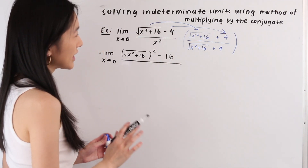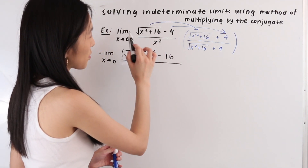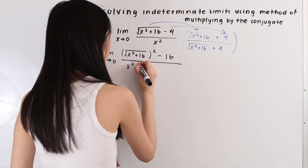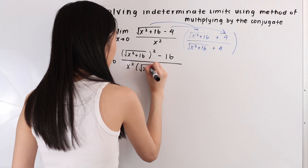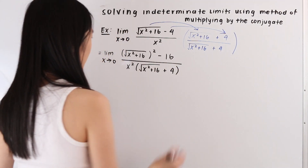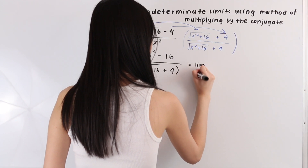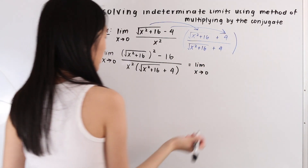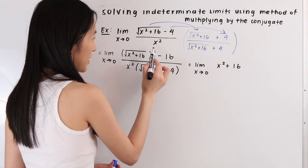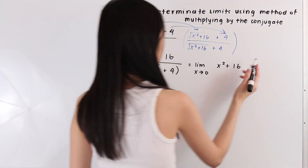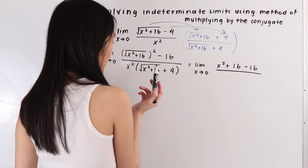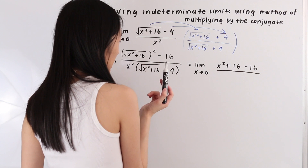Notice that we only need to multiply out the numerator because that's where the conjugate came from, so we can just leave the denominator as is. In the denominator we have x squared times the square root of x squared plus 16 plus 4. Now let's simplify: we have the limit as x approaches 0 of x squared plus 16 — because the square root cancels with the square — minus 16, all over x squared times the quantity the square root of x squared plus 16 plus 4.